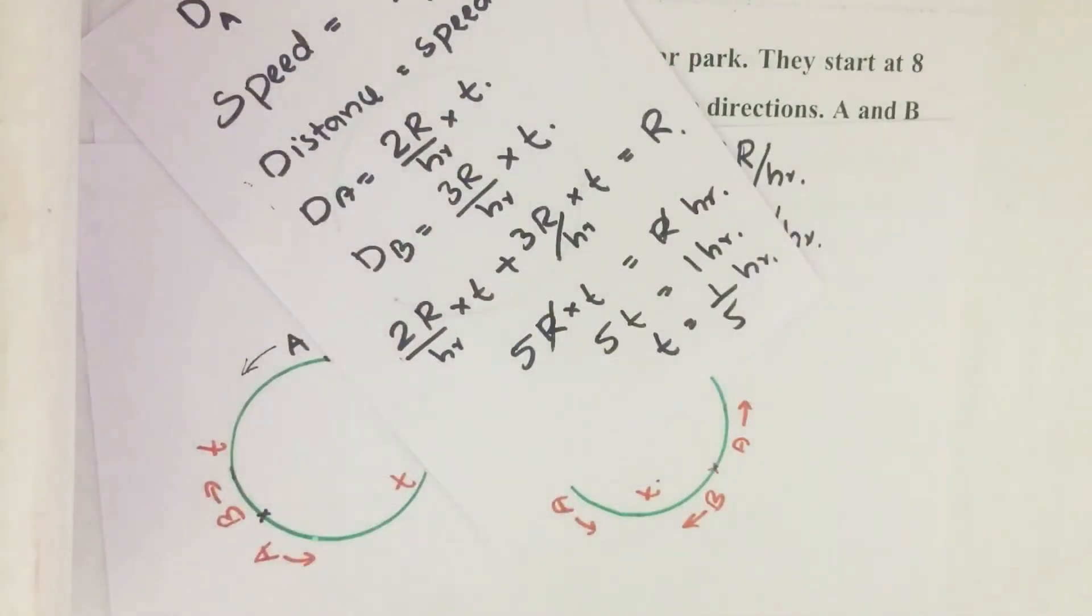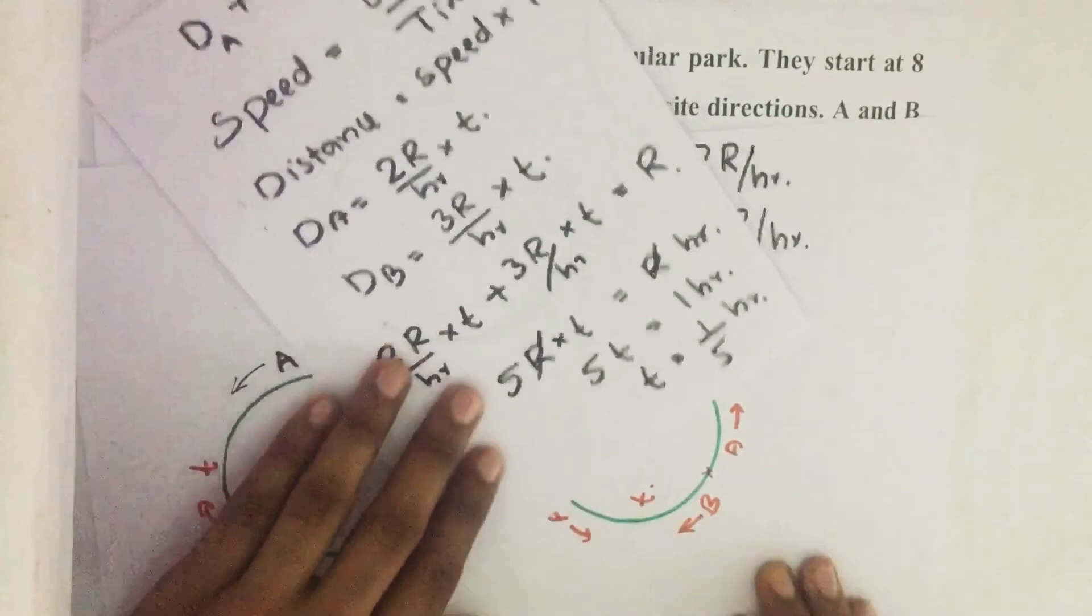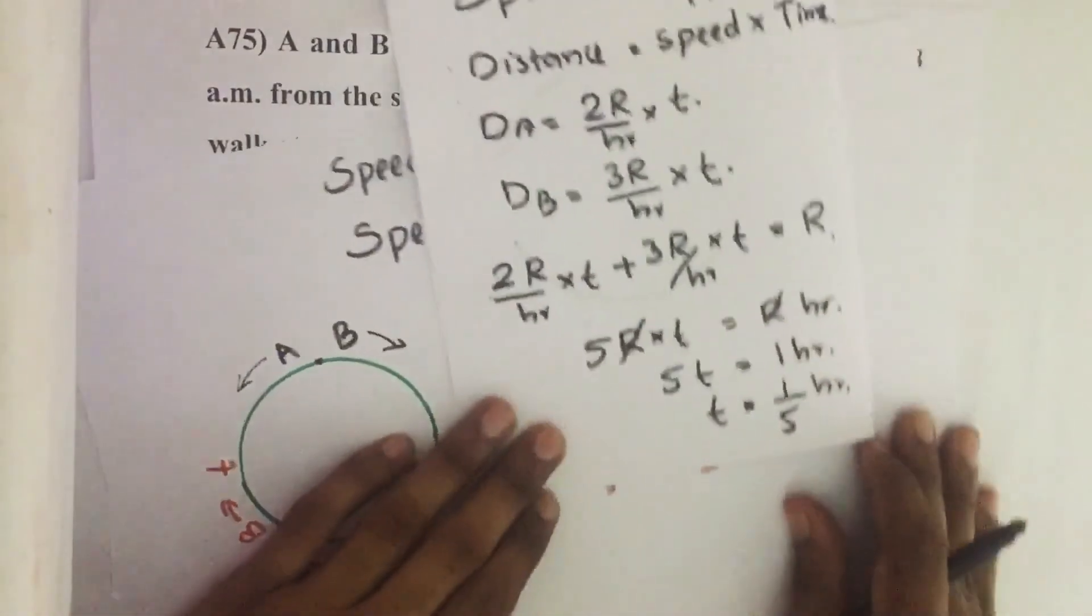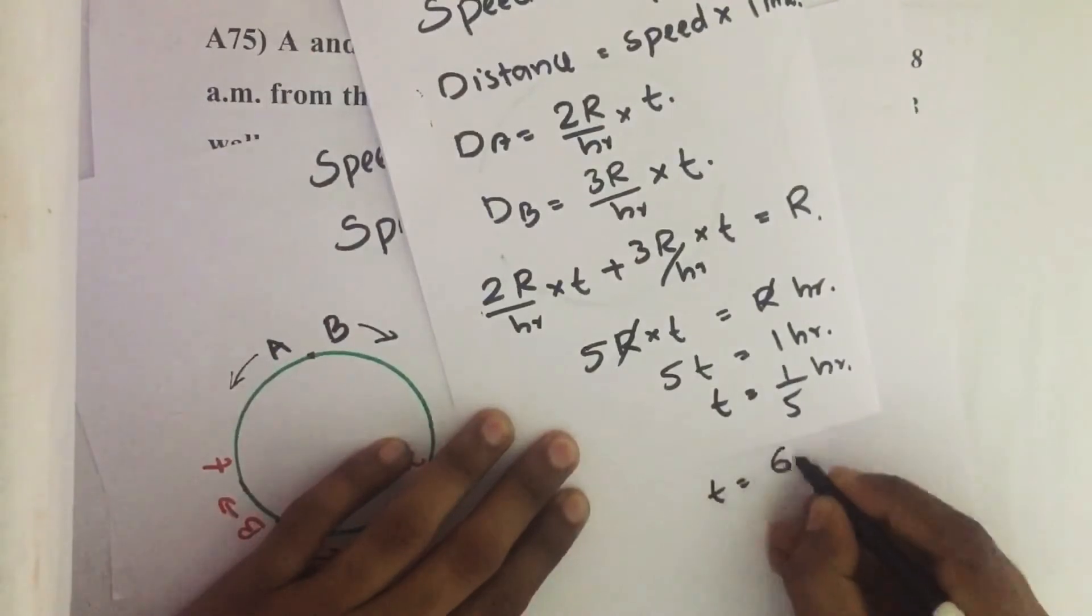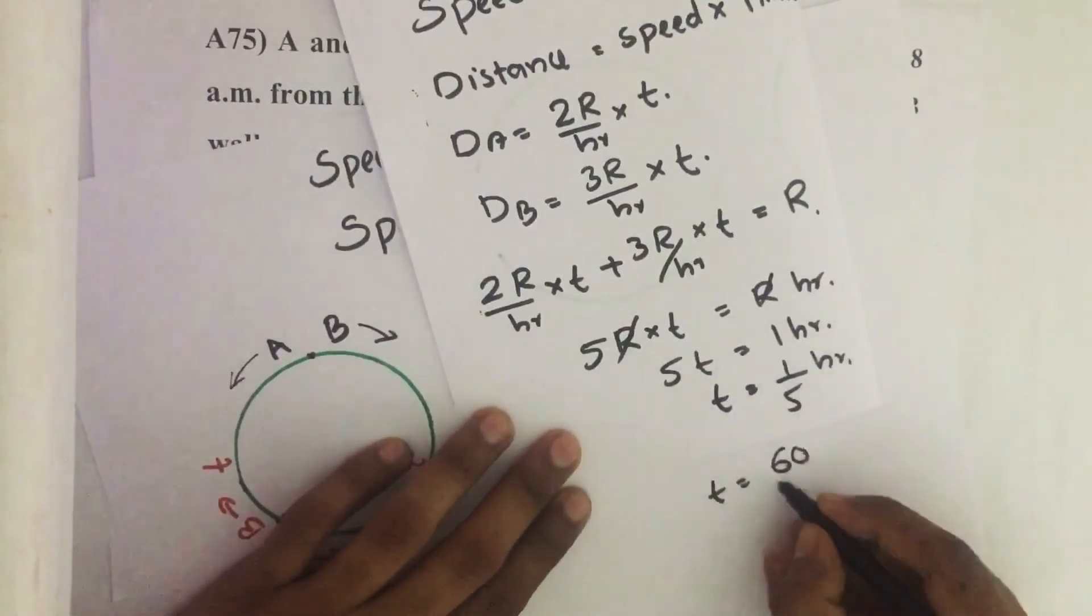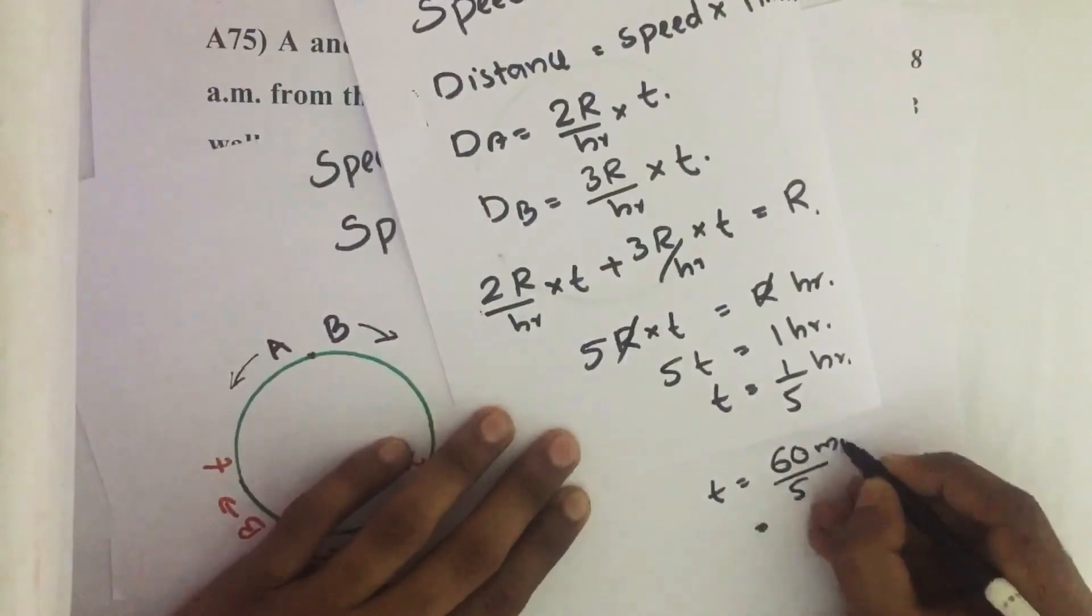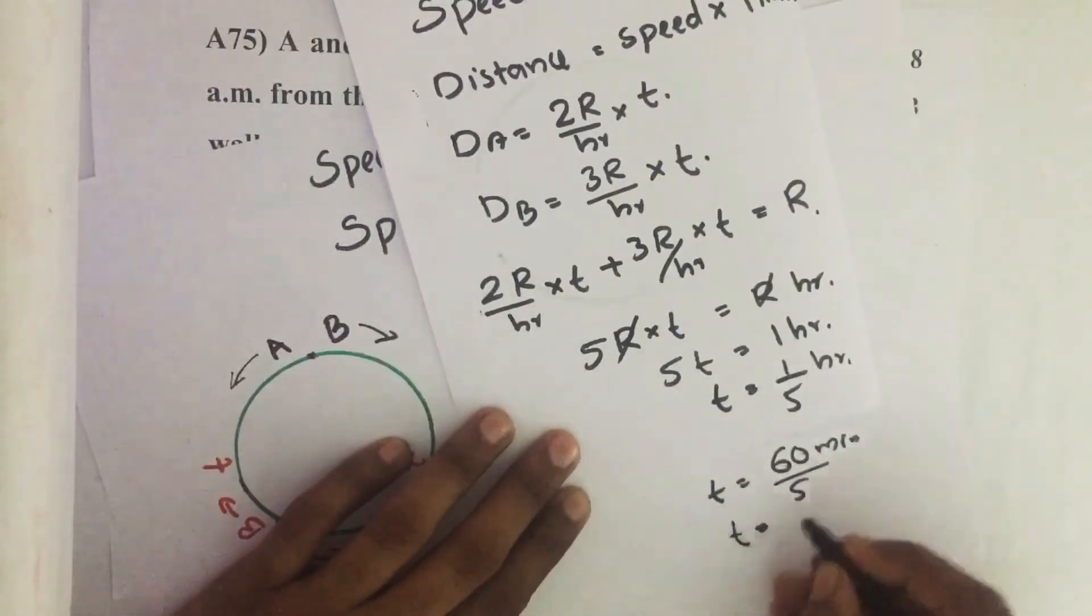How can we write this 1 by 5 hour? 1 hour equals 60 minutes divided by 5. That means T equals 60 by 5, 12 minutes.